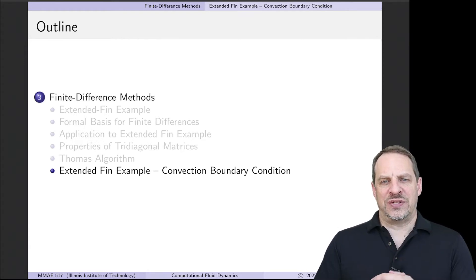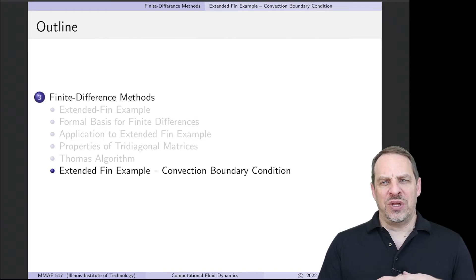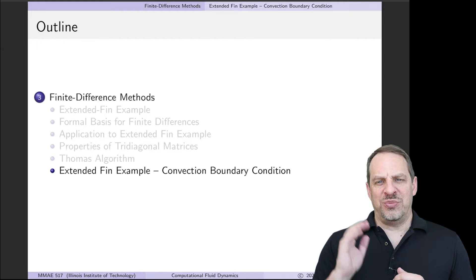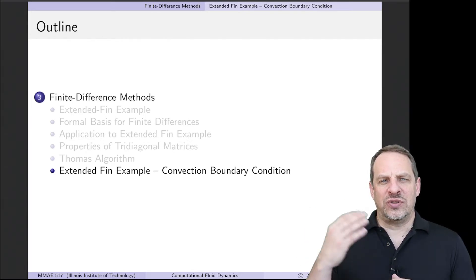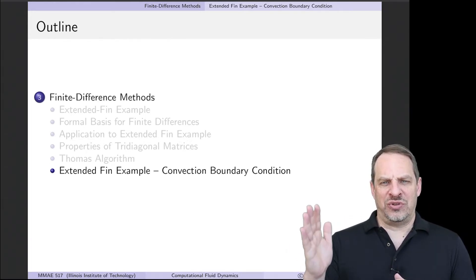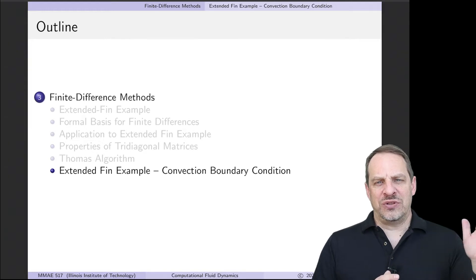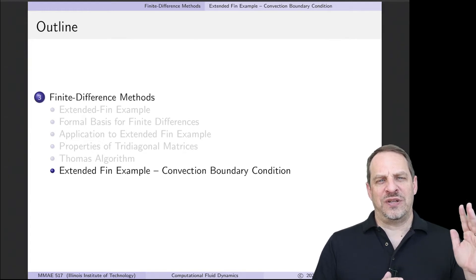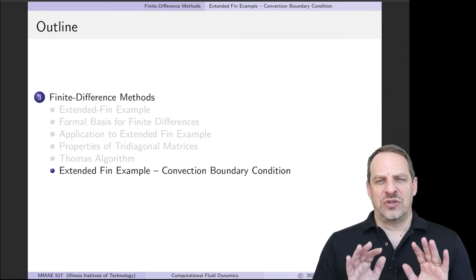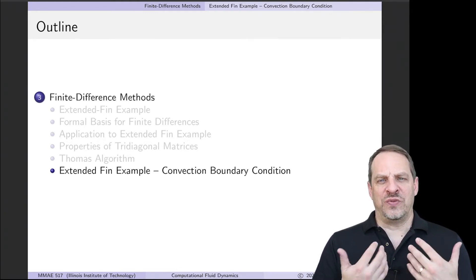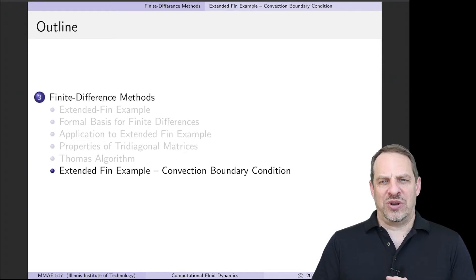Now we want to come back to the extended fin example and address something we've left hanging: the boundary condition at the tip. In our first implementation, we assumed we knew the temperature at the base and the tip of the fin. While knowing the base temperature is expected, the Dirichlet boundary condition — a fixed specified temperature at the tip — is not a very physical boundary condition. So here we want to look at a more natural, more physical one: the convection boundary condition.